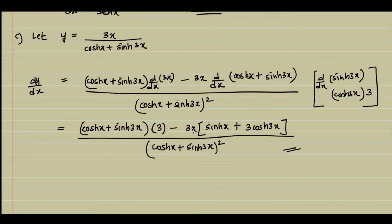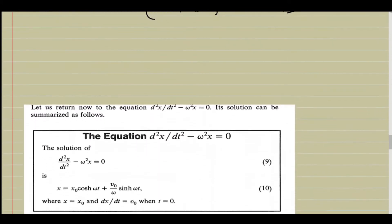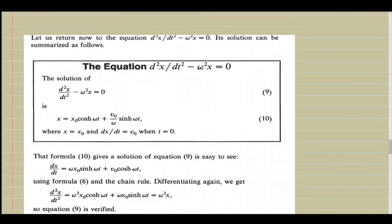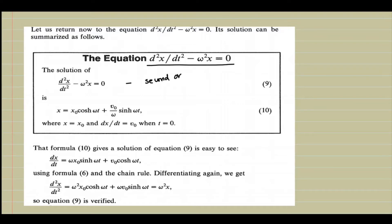In this way we can solve many differentiation problems. The key is to remember the differentiation identities for hyperbolic functions. Now let us study the differential equation d²x/dt² − ω²x = 0. This is a second-order ordinary differential equation.